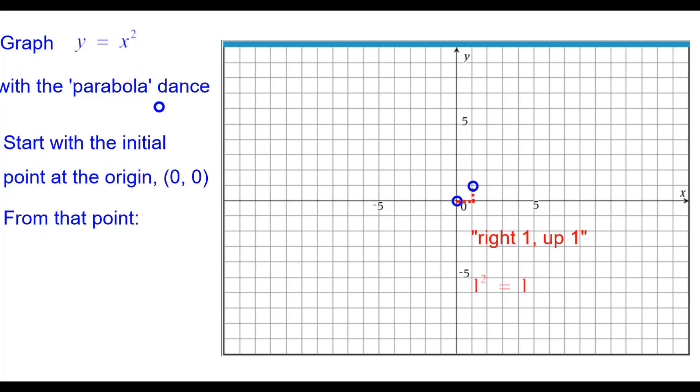Right two, up four, because two squared is four. Three squared is nine, so right three, up nine.